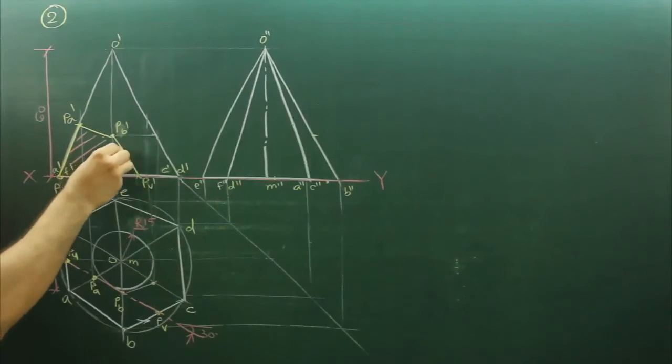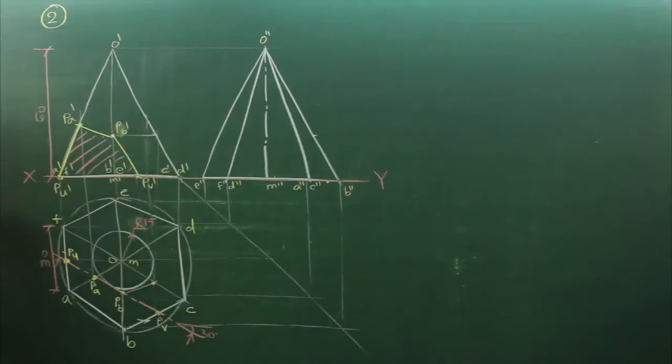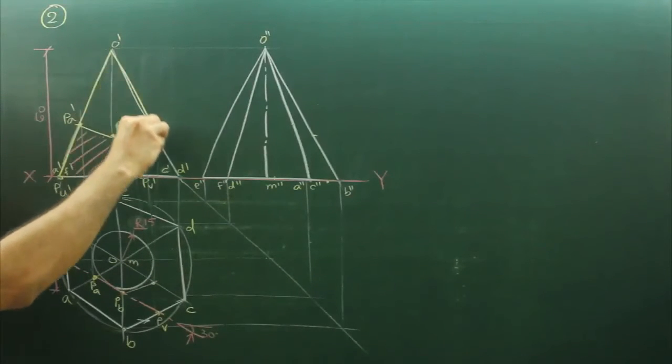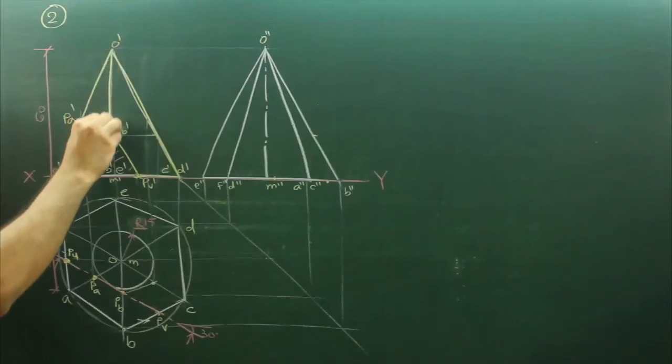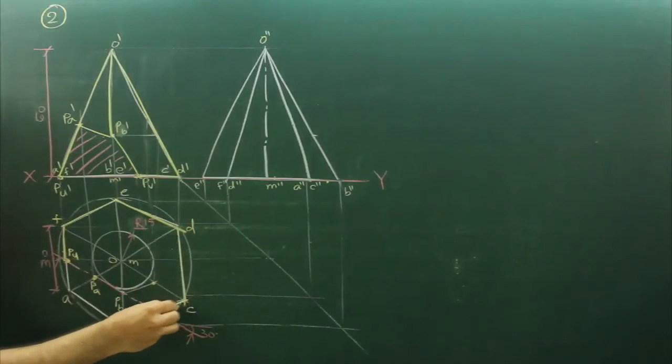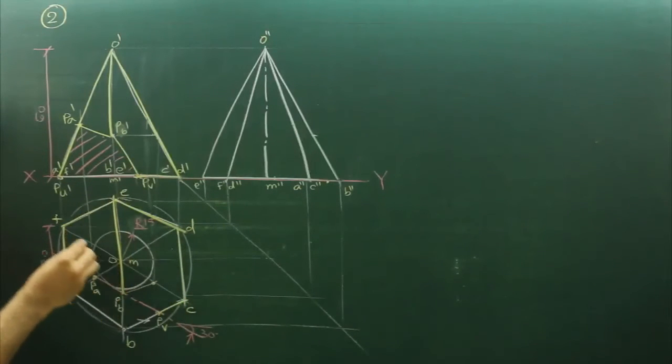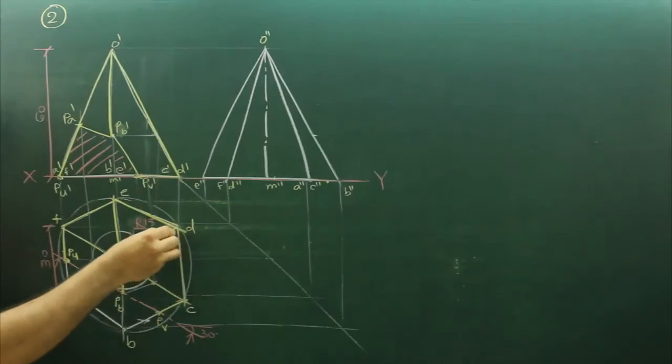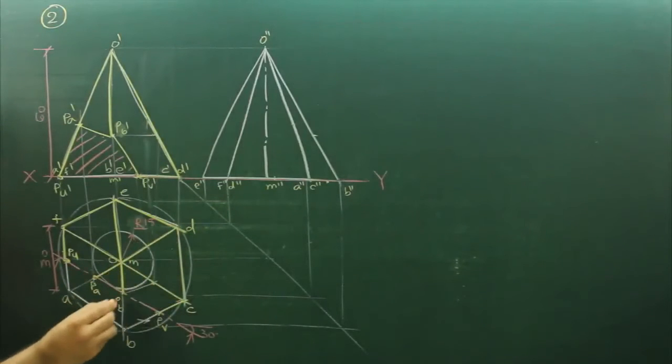This much portion will be hatched, the remaining part will be down. In top view also, this much portion will be down. Now we will draw side view.